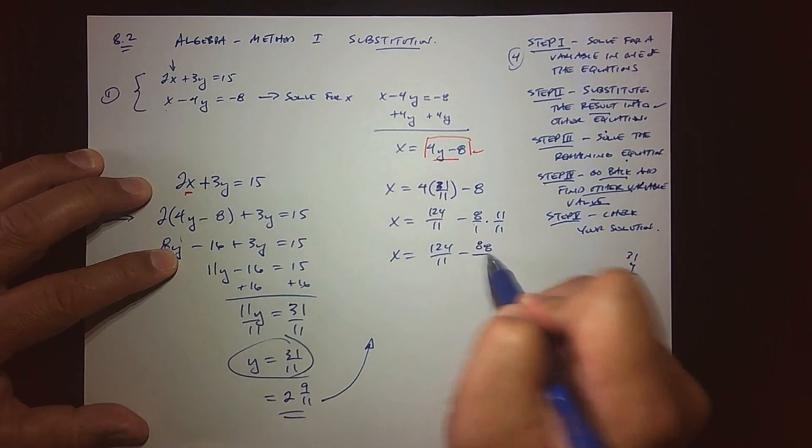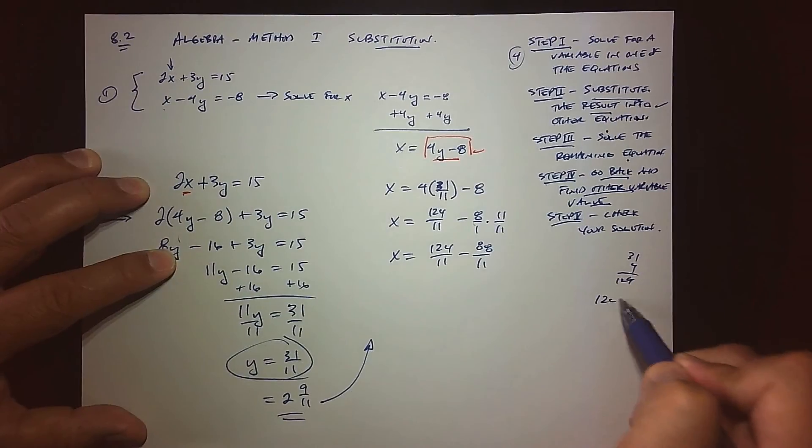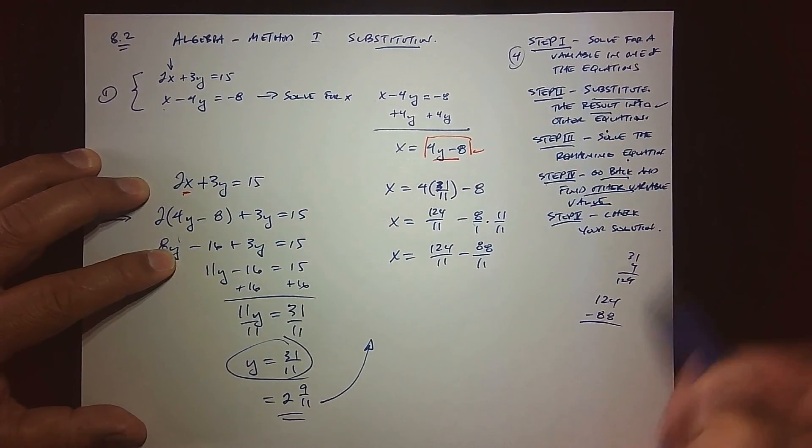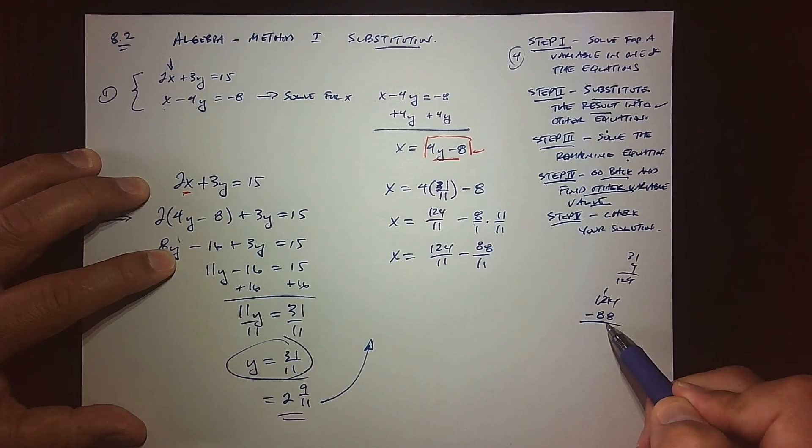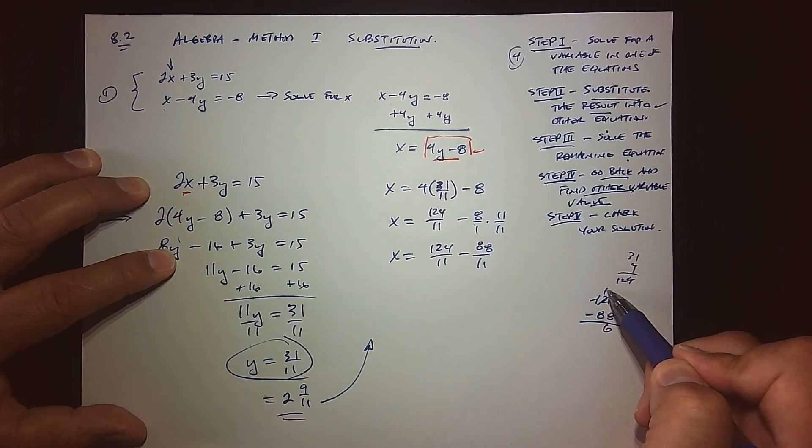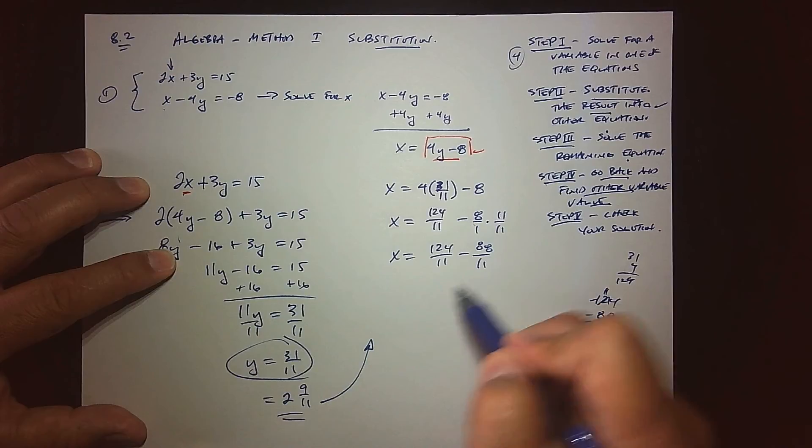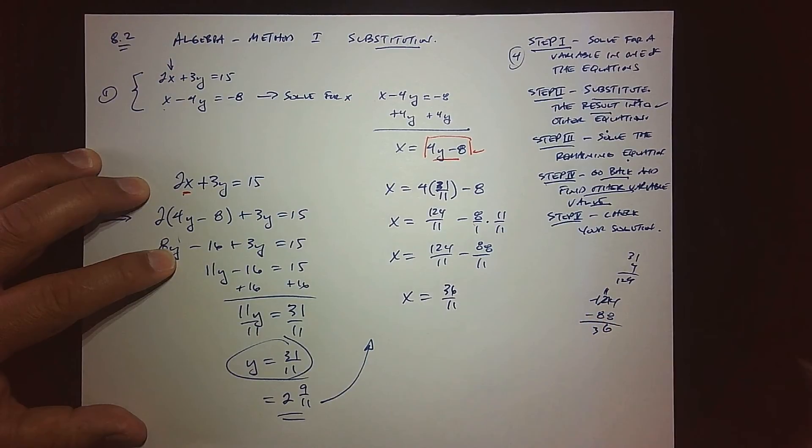124 over 11—I think that's 88 over 11. If I subtract 88 from 124, borrow, we get 36. So we get x equals 36 over 11, which I think is 3 and 3/11.